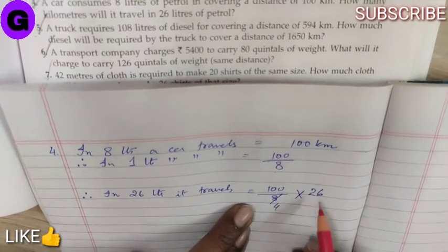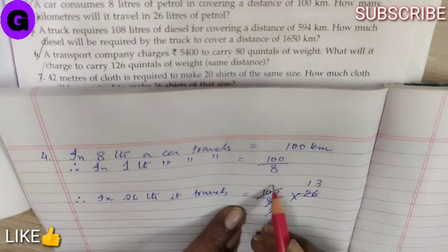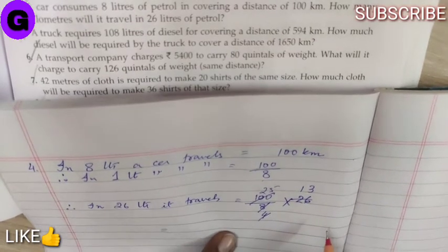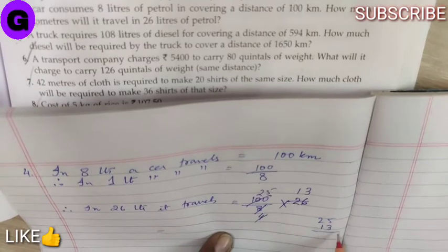So, now, let us reduce. 2, 4's are 2, 1, 3. 4, 25's are 100. So, now,